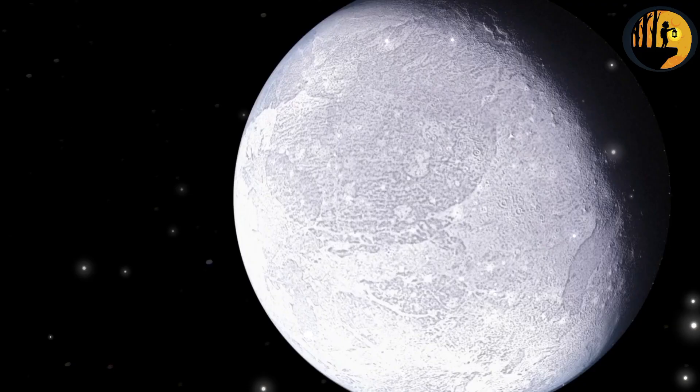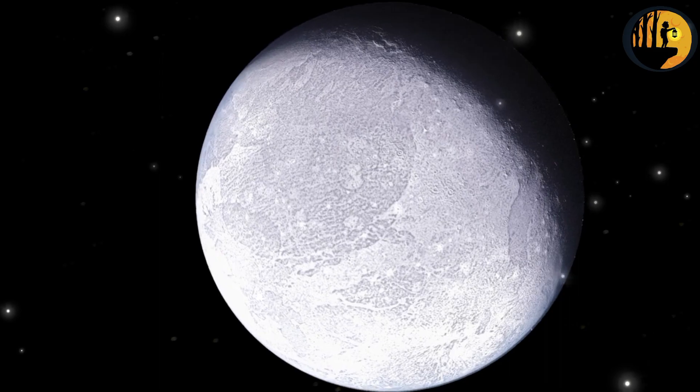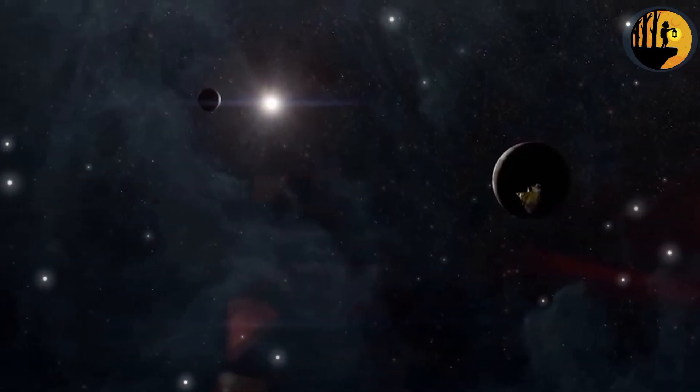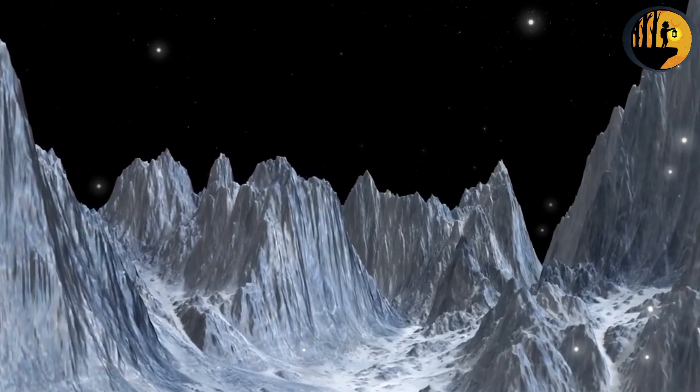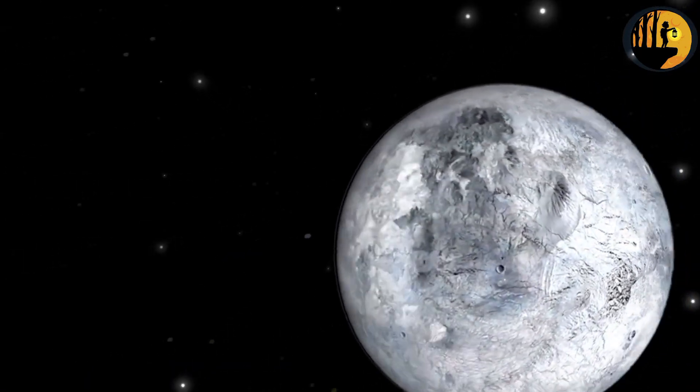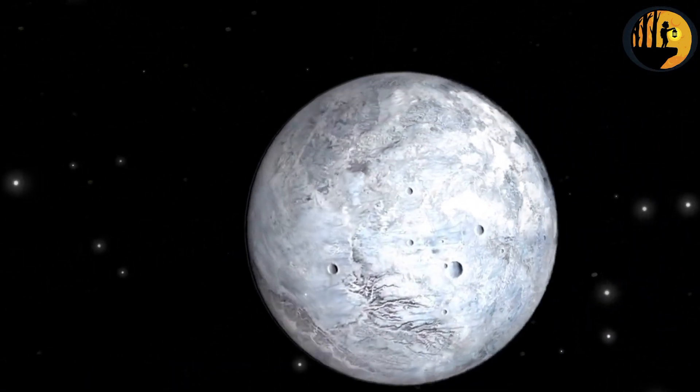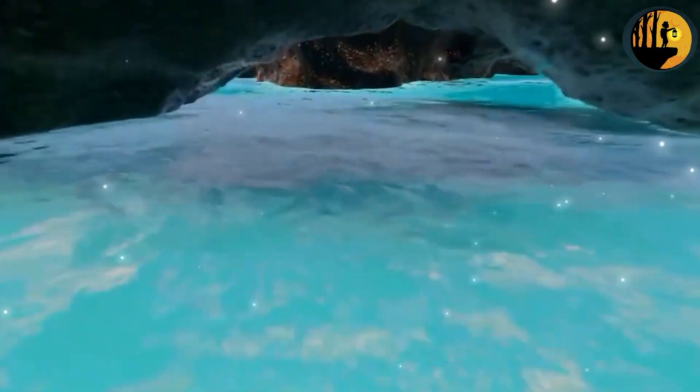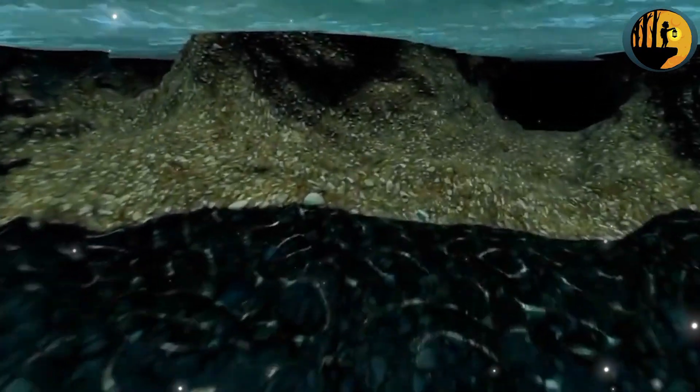Pluto also has a thin atmosphere composed primarily of nitrogen, with traces of methane and carbon monoxide. However, due to its distance from the sun, the atmosphere can freeze and collapse when Pluto moves farther away. When it gets closer to the sun during its elliptical orbit, the frozen atmosphere can temporarily sublimate.